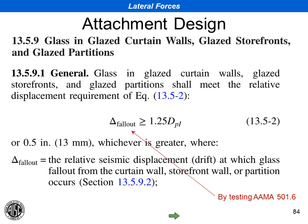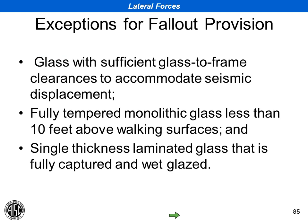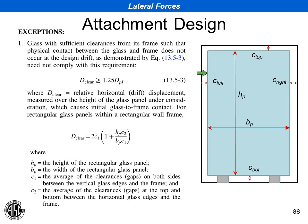When looking at glazing, the fallout deformation of the glazing system has to be greater than 1.25 times the anticipated inelastic displacement of the building frame. The goal is to make sure the glazing is able to stay in the frame following an earthquake. This is determined using the AAMA test 501.6. You need sufficient glass-to-frame clearance to accommodate displacement without the glass falling out of the frame — clearances on the sides, top, and bottom, with setting blocks at the bottom to take the gravity load of the glazing.